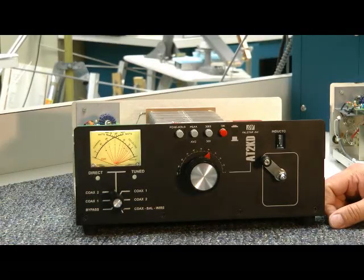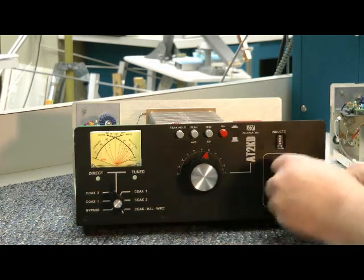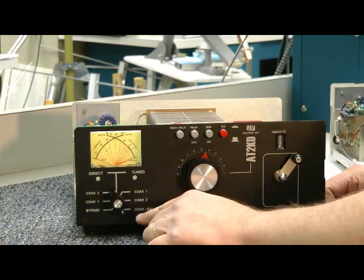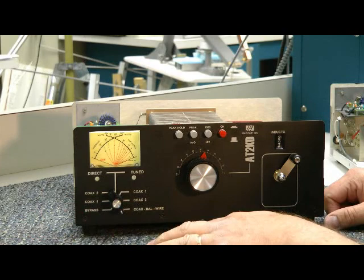Well, here it is, the AT2KD antenna tuner. It's just a two-dialer, roller inductor, variable capacitor, six-position antenna switch. It has a bypass switch, so you can bypass a tuner, too.